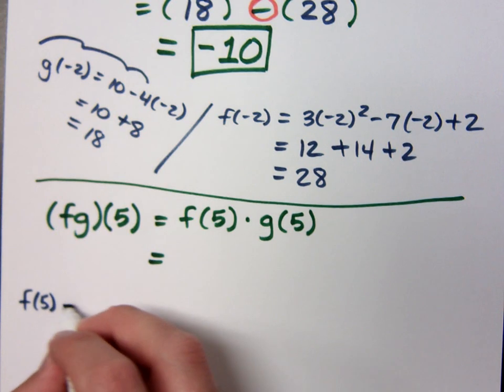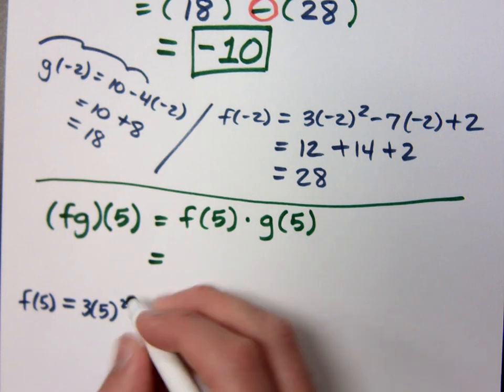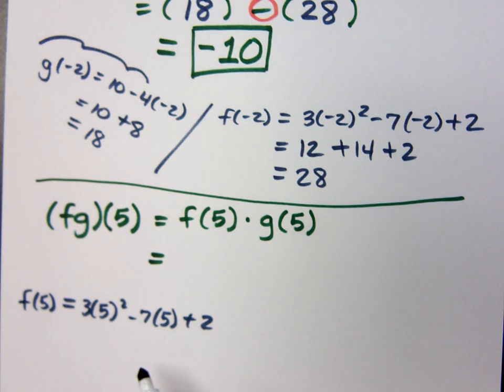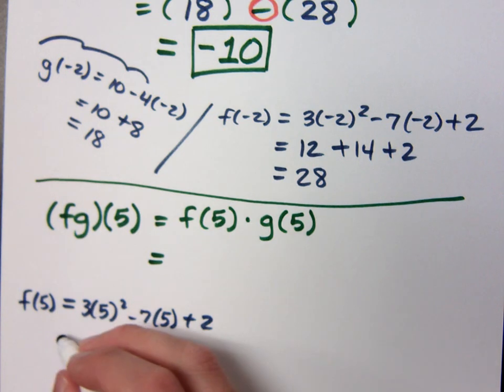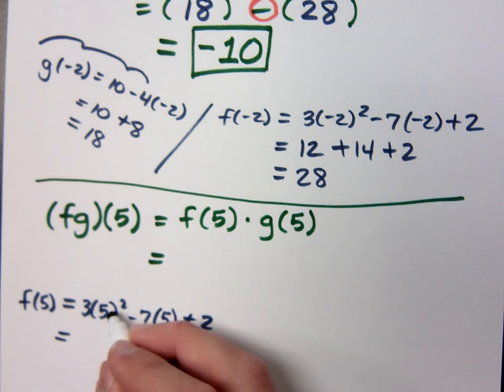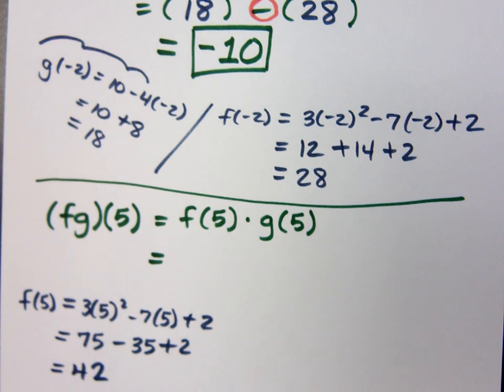So f of 5, if you go back and look at your function, it was 3x squared, so it's going to be 3 times 5 squared minus 7 times 5 plus 2. Do you all agree with that? The only thing I'm doing from here is just an exercise in arithmetic. That means you just do the order of operations and you're going to be okay. What's 3 times 5 squared? You square the 5, you get 25 times 3 is 75 minus 35 plus 2 equals what? 42. It equals 42.